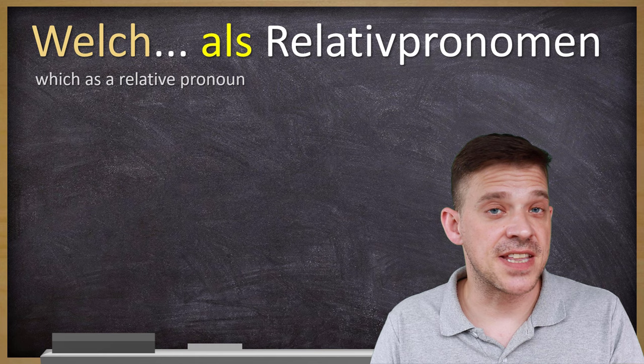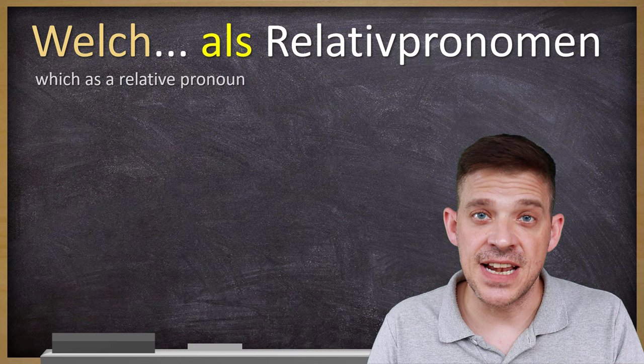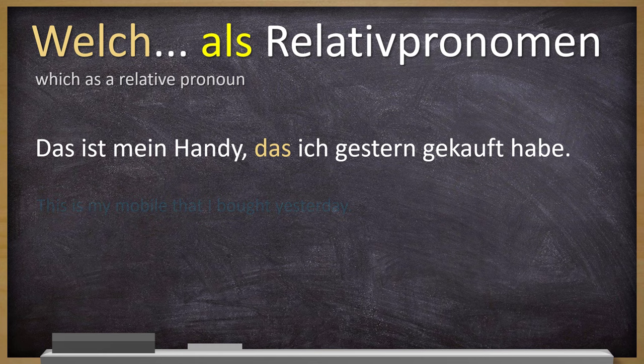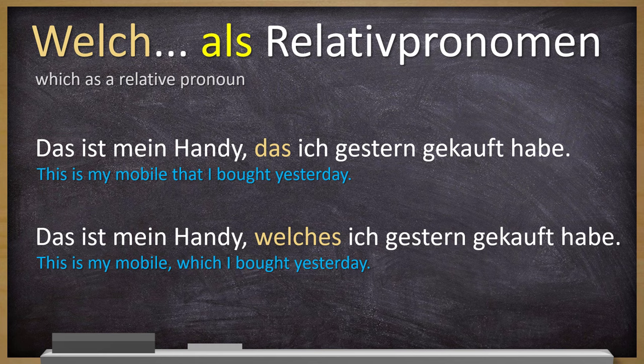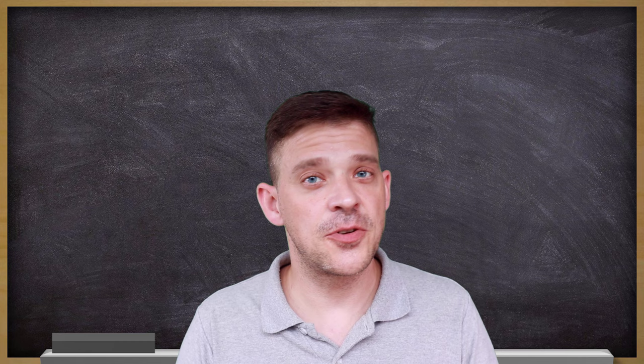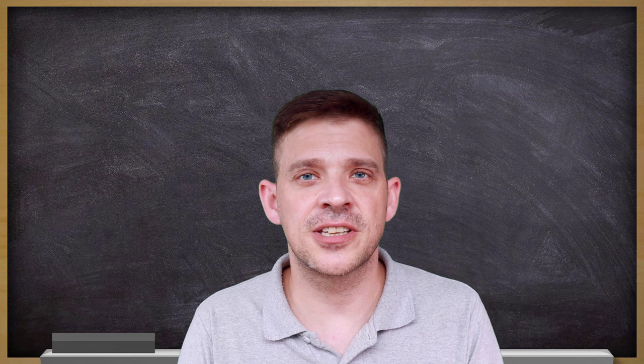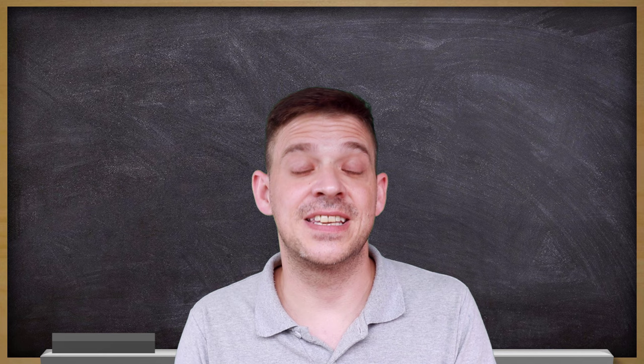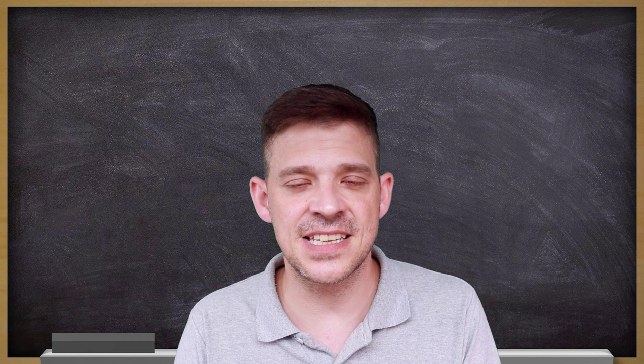Und das nächste — bonus tip four: welch als Relativpronomen. Yes, welch can also be used as a relative pronoun. For example: Das ist mein Handy, das ich gestern gekauft habe — This is my phone that I bought yesterday. You could also say: Das ist mein Handy, welches ich gestern gekauft habe — exactly the same meaning. The version with das is more common; welches is less common but appears in older texts. For more on relative clauses, watch the playlist. Vielen Dank, bis zum nächsten Mal, auf Wiedersehen und Tschüss!